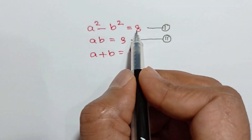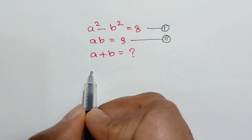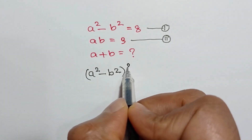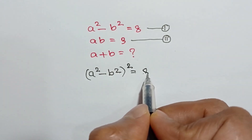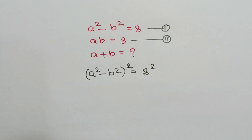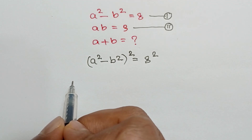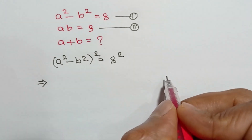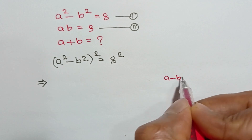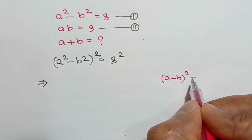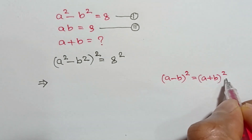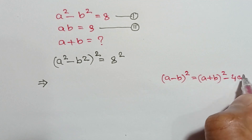Taking a square on both sides of equation number one, we will get: a squared minus b squared, whole square, is equal to 8 squared. We apply the formula: a minus b whole square is equal to a plus b whole square minus 4 times ab.